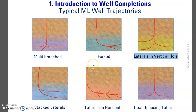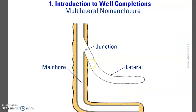Here is an example of a multilateral well. This is the main wellbore that was drilled, and as you can see it is cemented and cased. This is the second or third level — we'll talk about the levels on the next page.